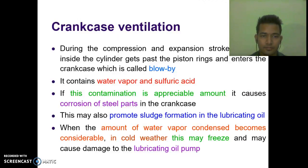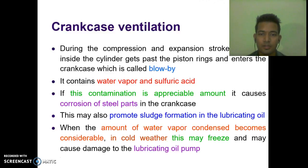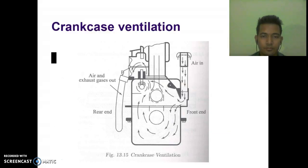Now, crankcase ventilation. During the compression and expansion strokes, gas inside the cylinder gets past the piston rings and enters the crankcase — this is called blow-by. It contains water vapour and sulphuric acid. If this contamination is in appreciable amounts, it causes corrosion of steel parts. It may also promote sludge formation in lubricating oil. When the amount of condensed vapour becomes considerable in cold weather, it may freeze and cause damage. Here you can see the diagram of crankcase ventilation.